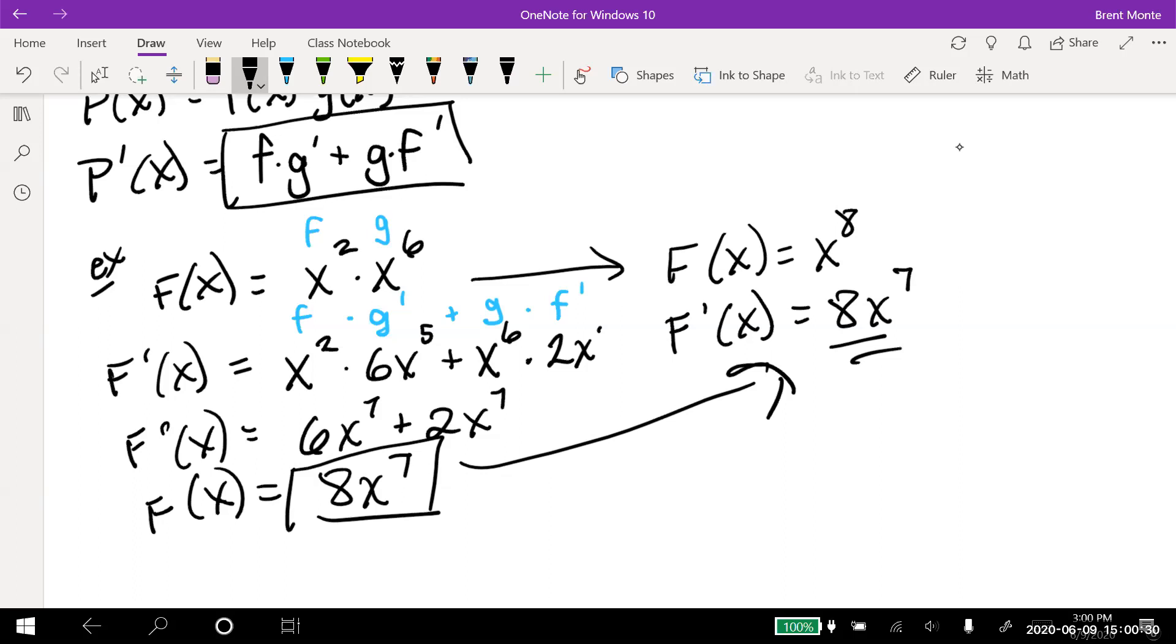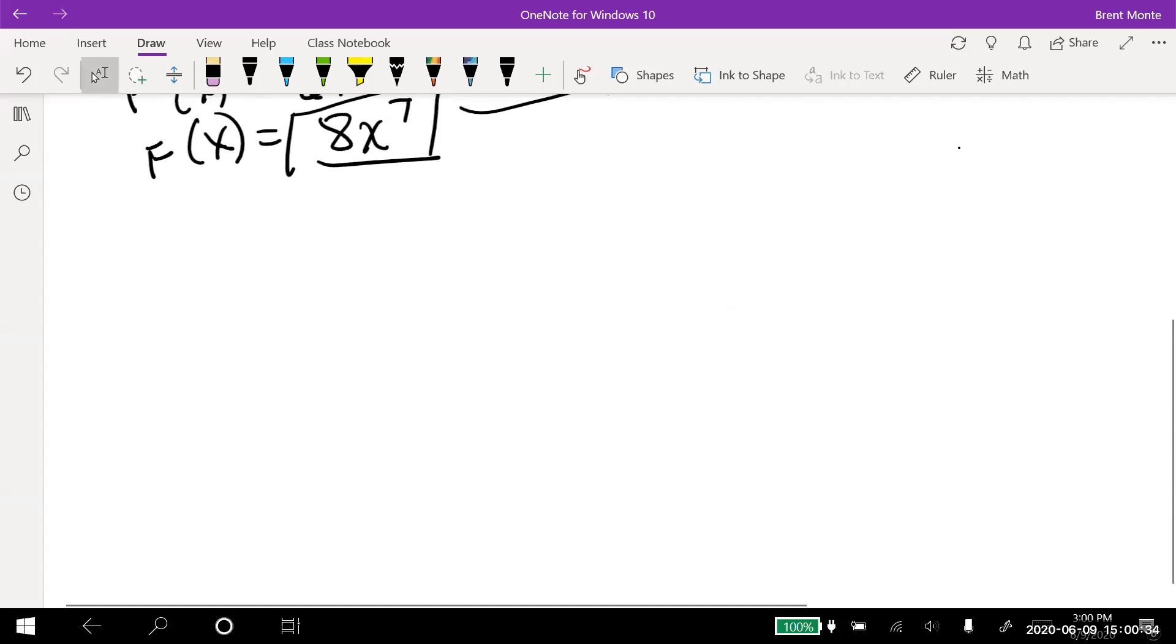So let's do another example just to kind of get the hang of it. We'll make this one just a little bit more difficult, but not too crazy. Let's call it h(x), and we're going to do x²(5x - 2). And you can distribute this through and find out what the derivative should be. If you want to, you can check it that way.